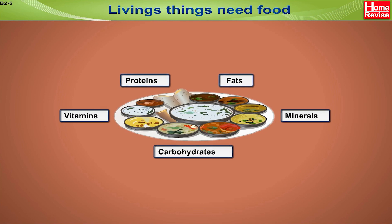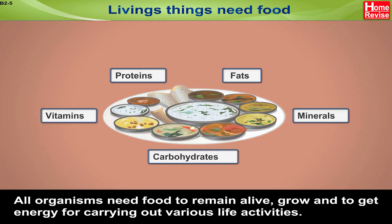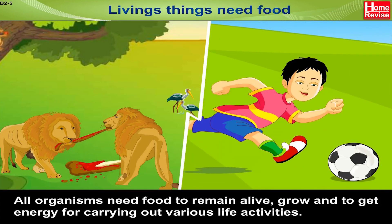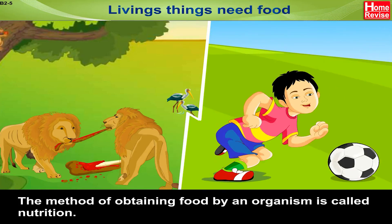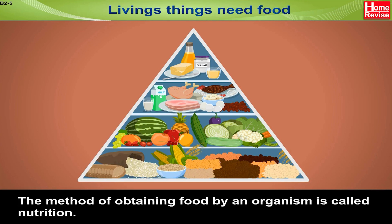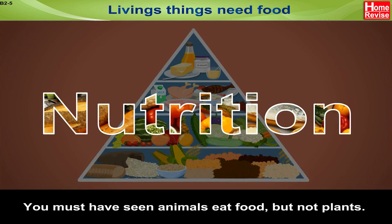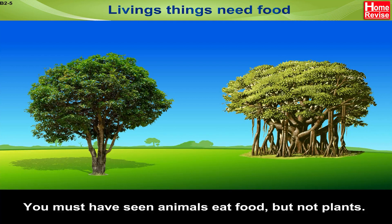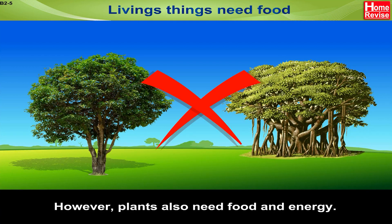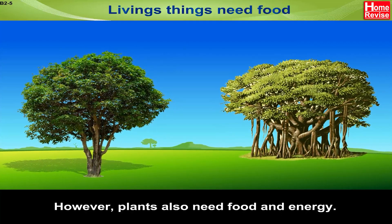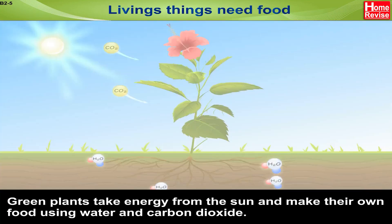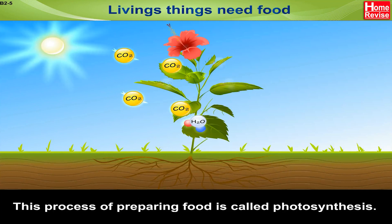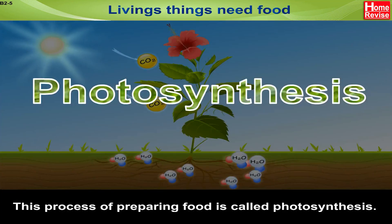Living things need food. All organisms need food to remain alive, grow, and to get energy for carrying out various life activities. The method of obtaining food by an organism is called nutrition. You must have seen animals eat food, but not plants. However, plants also need food and energy. Green plants take energy from the sun and make their own food using water and carbon dioxide. This process of preparing food is called photosynthesis.